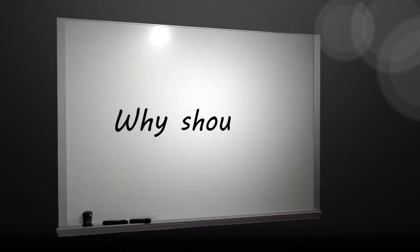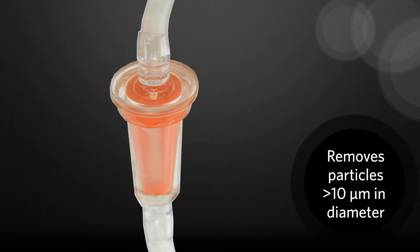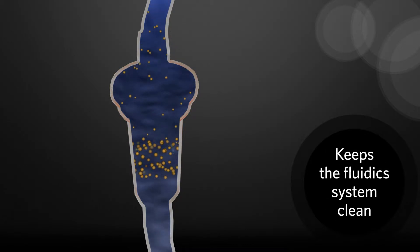Why should I replace the sheath filter? The sheath filter removes particles greater than 10 microns in diameter from the sheath fluid. This keeps the fluidic system clean of particles, preventing buildup on the filter.